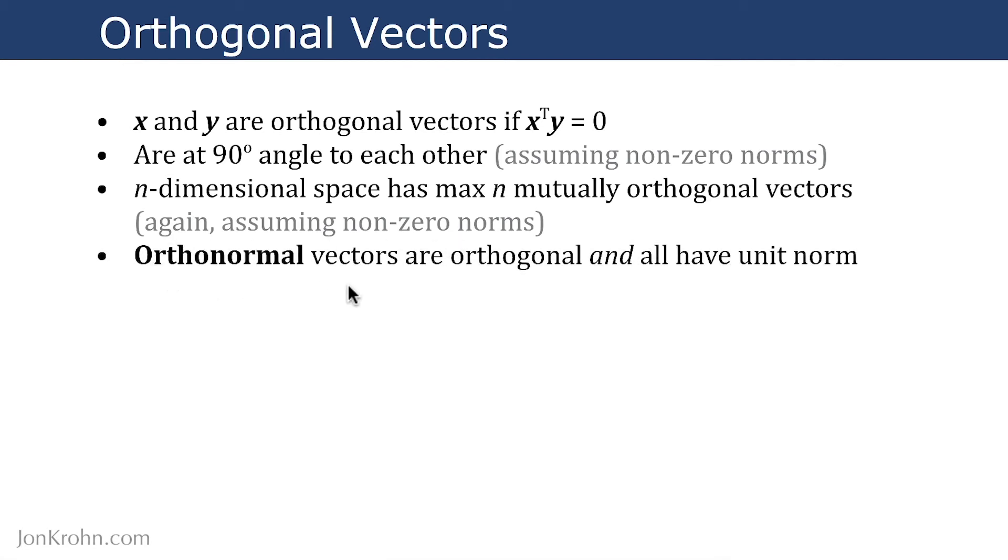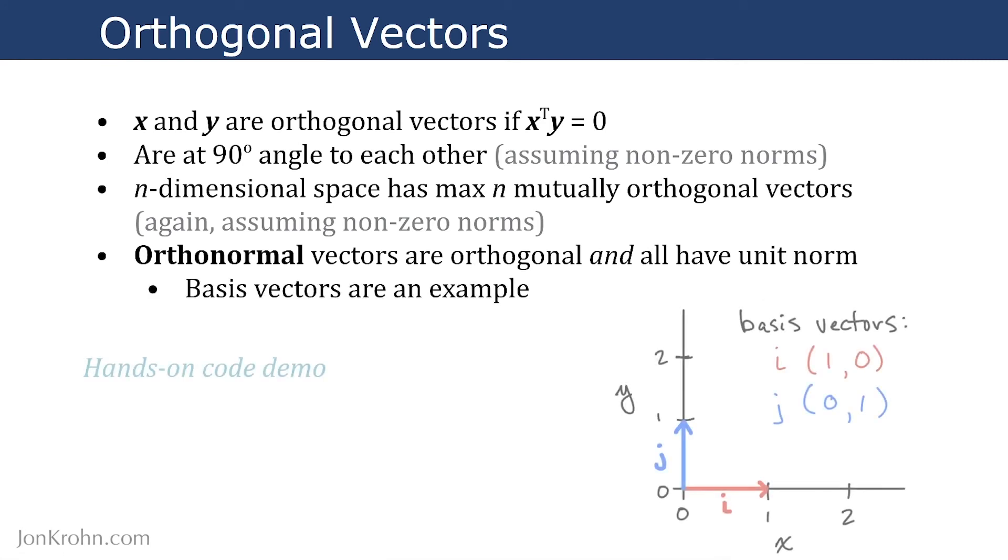So orthonormal vectors are a special case of orthogonal vectors. They are both orthogonal and they all have unit norm. And we've actually already seen examples of this. Basis vectors are an example of orthonormal vectors. So basis vectors, like we saw on the preceding slide, they are orthogonal. They're at a 90-degree angle to each other. And these basis vectors are orthonormal because they have unit norm. They have a Euclidean distance length of one. All right, let's look at a quick hands-on code demo to bring this idea to life.